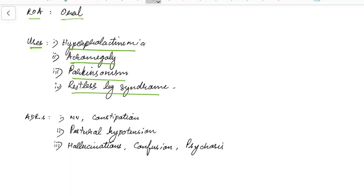Now let us see about the adverse drug reactions of Bromocryptin. Nausea, vomiting, constipation, postural hypotension, hallucinations, confusion, and psychosis are the various side effects of Bromocryptin.